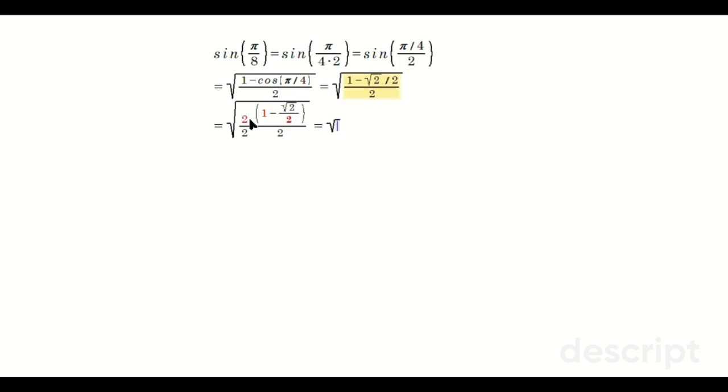That's going to give you the root of 2 minus the root of 2. And in the bottom, what you have is the 2 times the 2, which is 4. Then you distribute the root operation, so it's the root of 2 minus the root of 2 over the root of 4. That's equal to 2, so you end up here with the root of 2 minus the root of 2 over 2.